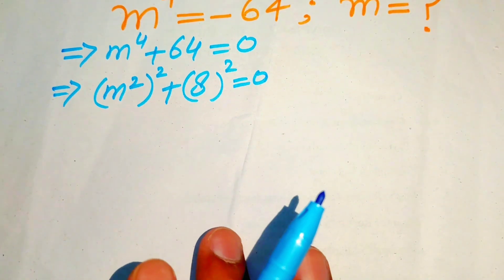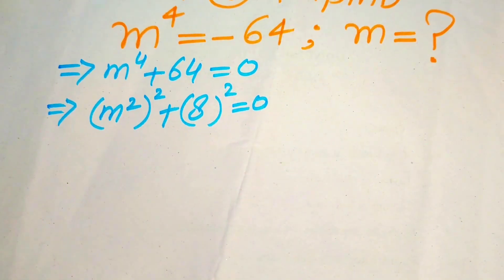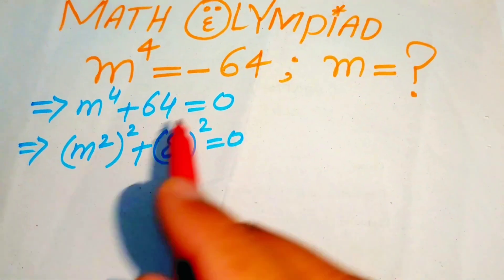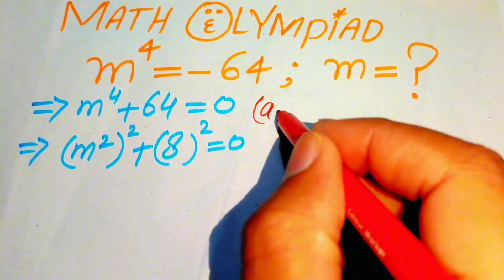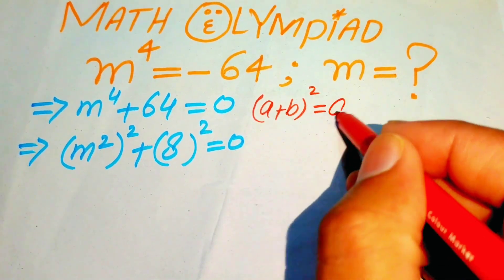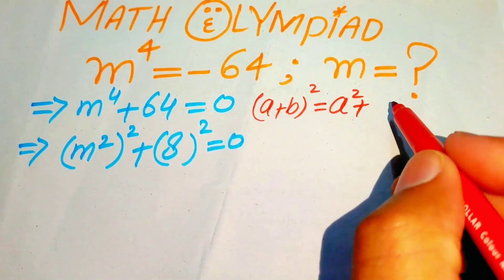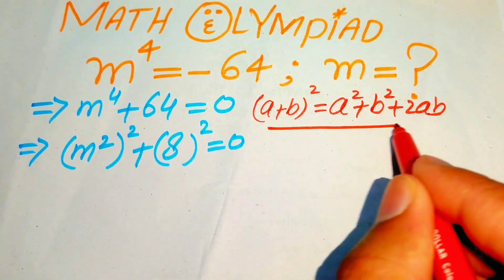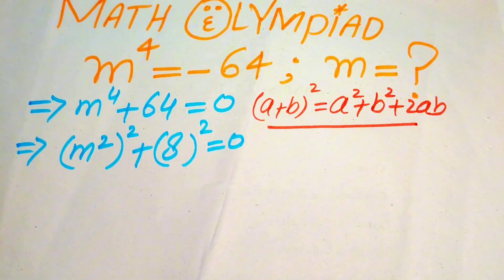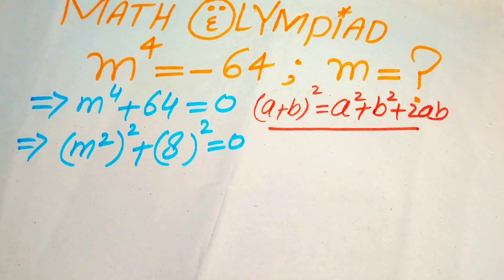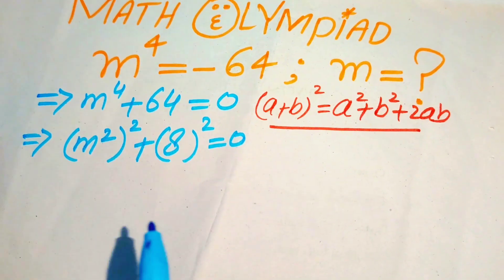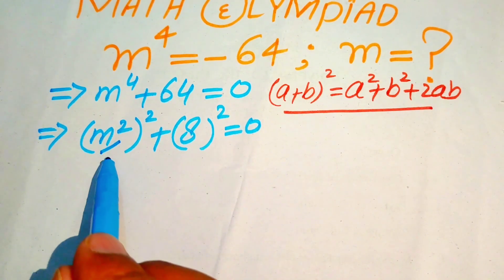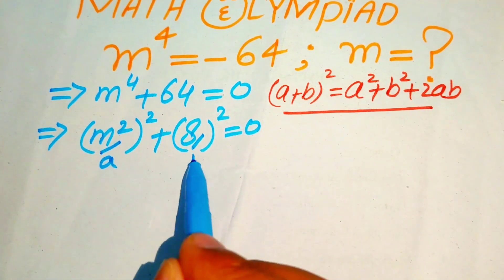Now we use the square identity: if we have (a + b) whole squared, it equals a squared plus b squared plus 2 times ab. We need to use this identity on the left hand side, where m squared is our a and 8 is our b.